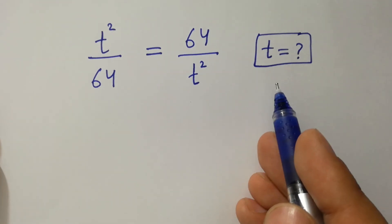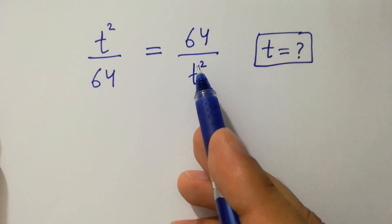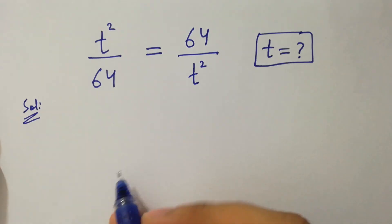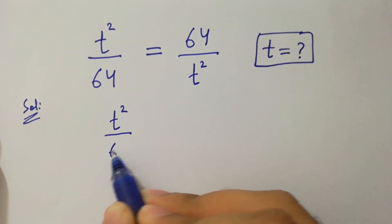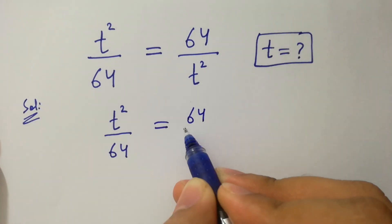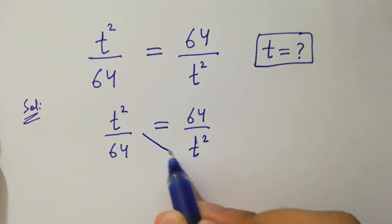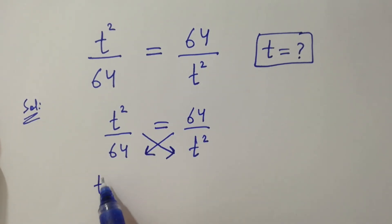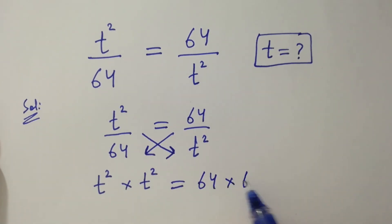Hello friends. Find the value of t if t squared over 64 equals 64 over t squared. Let's have a solution. So we have the question: t squared over 64 equal to 64 over t squared. It can be solved by cross multiplication. We have t squared times t squared equal to 64 times 64.